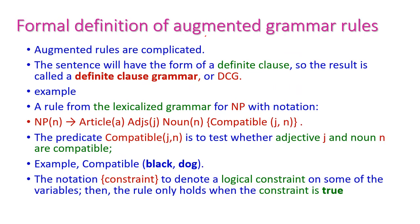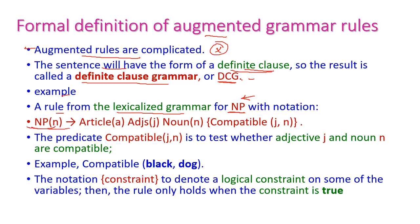The formal definition of augmented grammar rules. Normally augmented rules are very complicated. The sentence has the form of a definite clause, so the result is called definite clause grammar or DCG. For example, the rule from lexicalized grammar for NP — noun phrase. The noun phrase with notation NP(n), where n is the head word of the noun, expands as: NP(n) implies article a, adjective j, noun n with compatible(j, n).